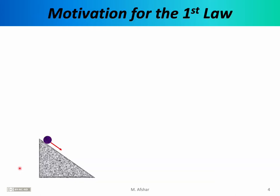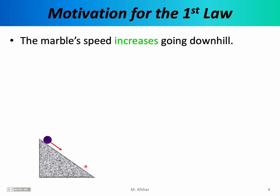To provide some motivation for Newton's first law of motion, we can conduct a thought experiment. Imagine you have an inclined surface and a marble that you place at the top of the incline and allow to roll down the hill. As you might guess, the marble's speed increases as it goes downhill — the force of gravity is acting on the marble, pulling it downwards, so it rolls faster and faster. You can even give the marble a push, imparting some initial velocity, and whatever that initial velocity is, it will increase as the marble goes downhill.